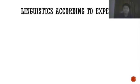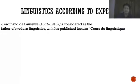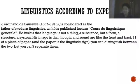Now I'm going to take the example of Ferdinand de Saussure, who is considered the father of modern linguistics, with his published lecture course 'Cours de linguistique générale.' He insists that language is not a thing or a substance, but a form — a structure, a system. His image is that thought and sound are like the front and back of a piece of paper, and the paper is the linguistic sign. You can distinguish between the two, but you cannot separate them.